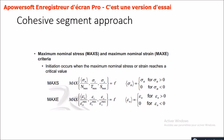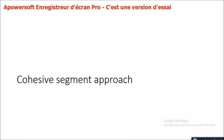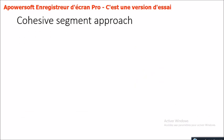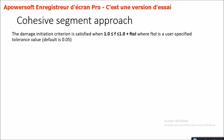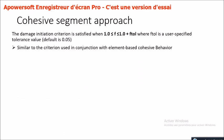For the maximum nominal stress (MAXES) and maximum nominal strain (MAXE) criteria, initiation occurs when the maximum nominal stress or strain reaches a critical value. The damage initiation criterion is satisfied when F is between 1.0 and 1.0 plus the tolerance FTOL, which is a user-specified tolerance value with a default of 0.05. This is similar to the criterion used with element-based cohesive behavior. The user may also specify a local material direction as the crack plane normal.